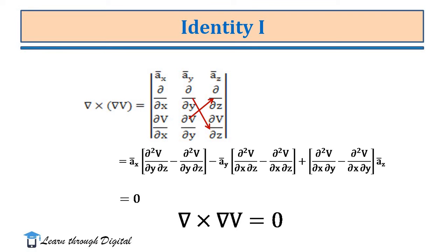Next, we write the Ay component: it is minus Ay-vector times (dou²V/dou x dou z minus dou²V/dou x dou z). For the Az component: it is dou²V/dou x dou y minus dou²V/dou x dou y. We observe that in the Ax, Ay, and Az components, all terms are equal and opposite, so the result will be 0.